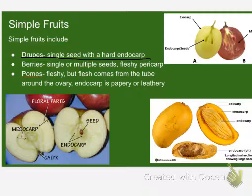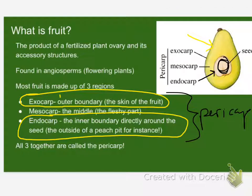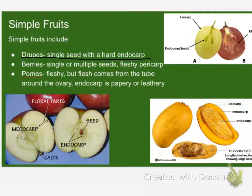Which one of those do you think might be a drupe? A single seed. Look at those three pictures and agree with the people at your table. Which one do you think is a drupe? Single seed, hard endocarp. The endocarp is that boundary between the fleshy part and the seed.